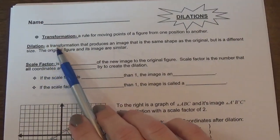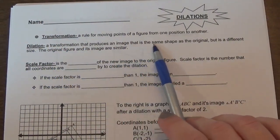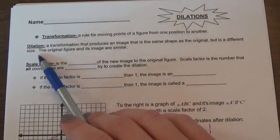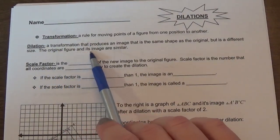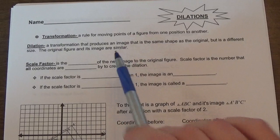So dilation is really going to change the size of the figure. A transformation that produces an image that is the same shape as the original but is a different size.